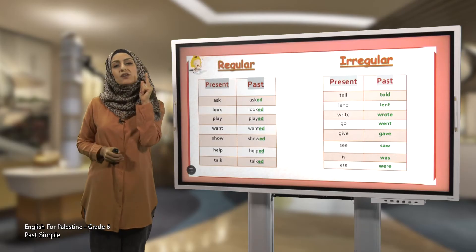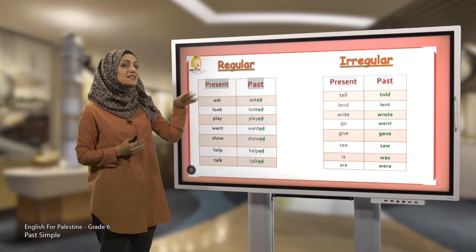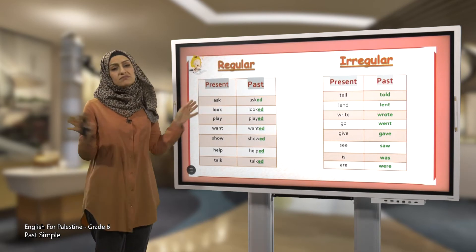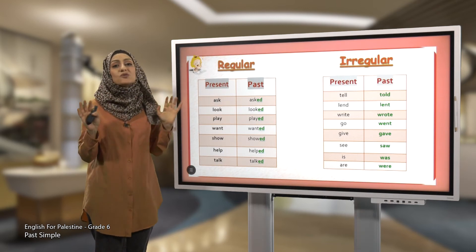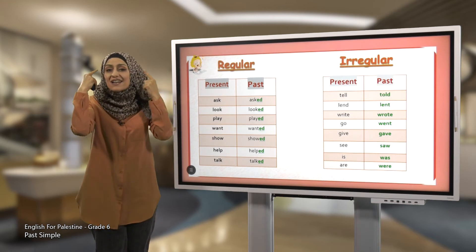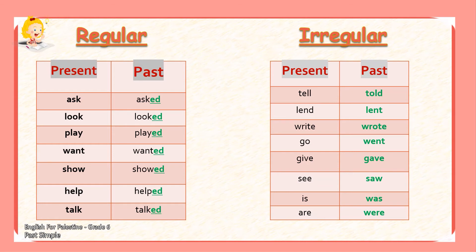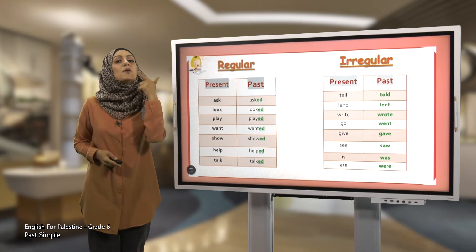Can you think of other verbs that take E-D to be in the past? Now let's look at some irregular verbs — the verbs that don't want to follow the rule and don't take E-D. Let's learn them and memorize them. Tell → told. Lend → lent. Write → wrote. Go → went. Give → gave. See → saw. Is → was. Are → were. Excellent, students! They are very easy to learn — just keep repeating them.